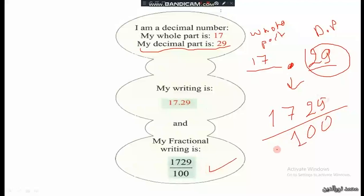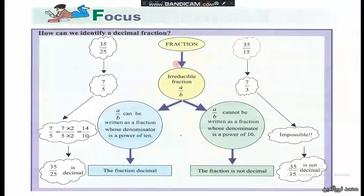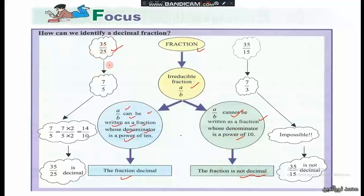As a summary: a fraction a over b, after reduction, can be written as a decimal fraction if its denominator is a power of ten. If a over b cannot be written with a denominator that is a power of ten, then it is not a decimal fraction.